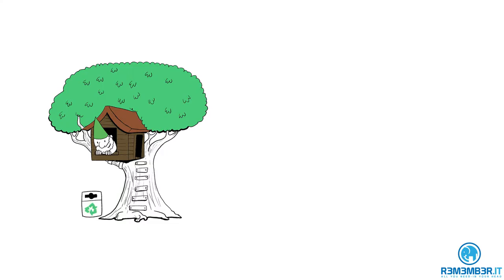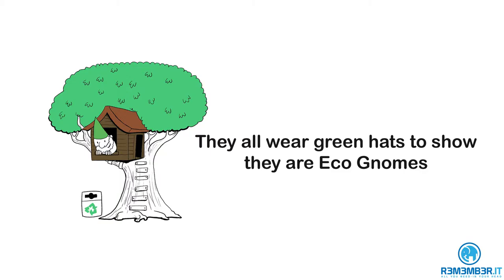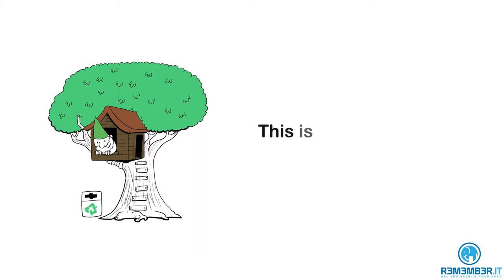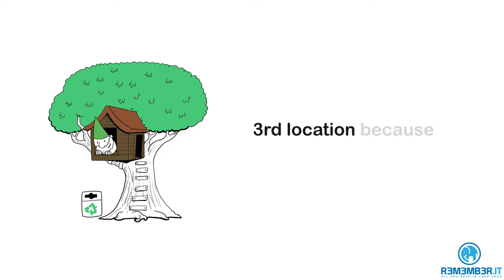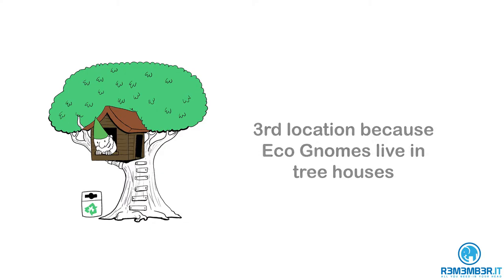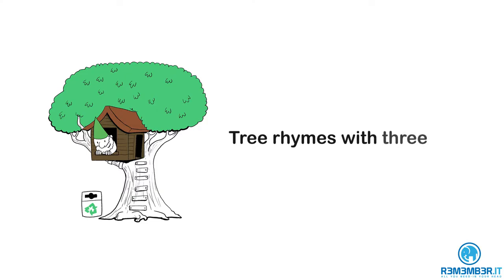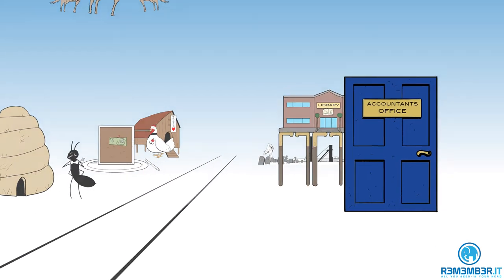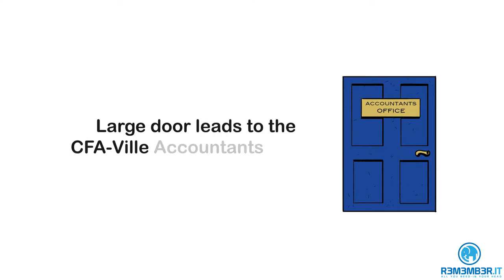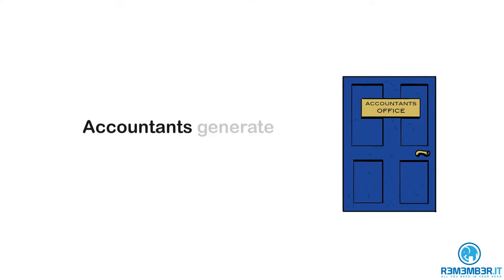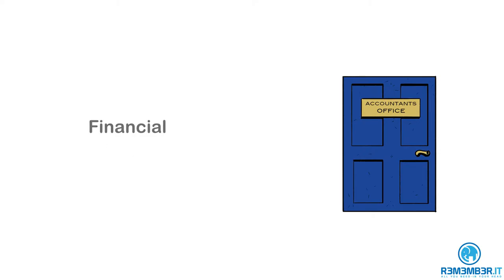The third location is here — it's the eco-gnome village. The eco-gnomes are a tribe of gnomes who live in CFAVIL and are very ecologically aware. They all wear green hats to show they're eco-gnomes, and as such, this is where the economics syllabus is covered. You know it's the third location because the eco-gnomes all live in tree houses, and tree rhymes with three.